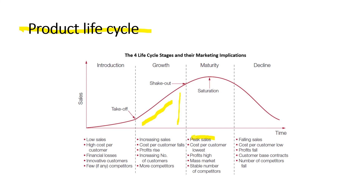Maturity is the peak — this is where you make the most money and the most sales. Cost per customer is at its lowest, profit is at its highest, you have the mass market, a stable number of competitors, and a huge customer base. Decline is where sales start to fall, cost per customer may become lower, profit falls, the customer base contracts, and the number of competitors falls. This is the product life cycle graph.